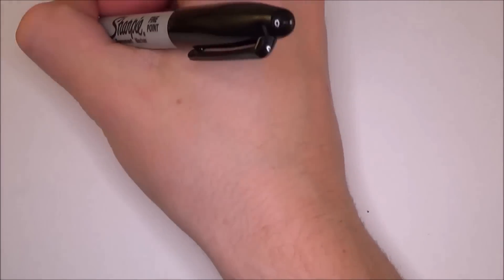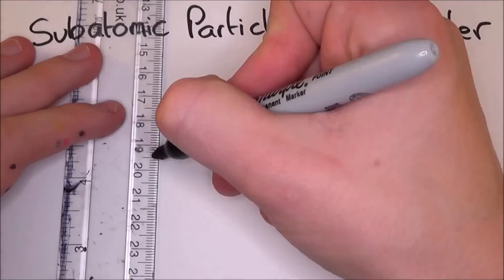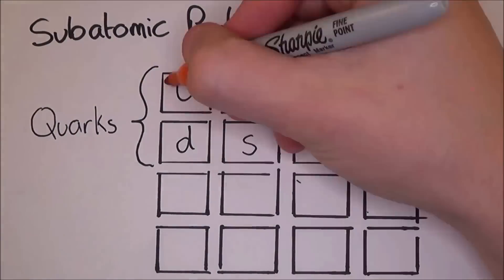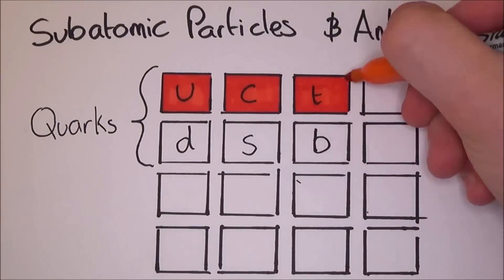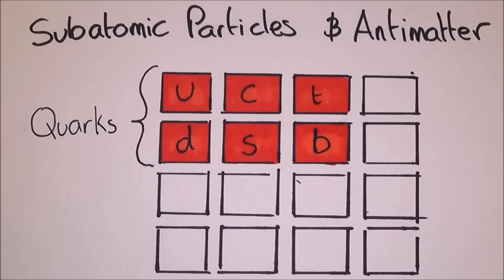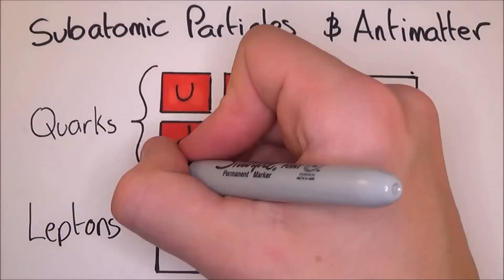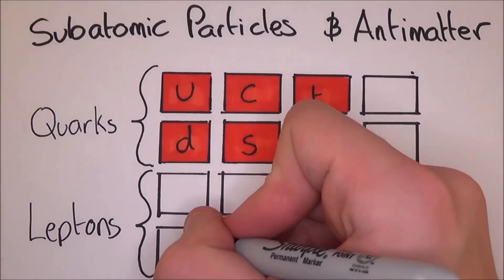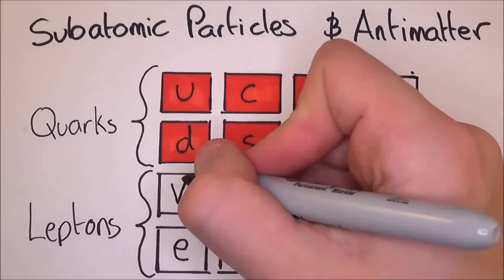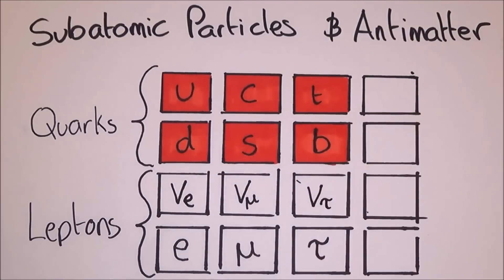Subatomic particles are split into three main sections: quarks, leptons — both of which are fermions — and bosons. With this topic, we are not really bothered about quarks, but leptons and bosons make up a big part of it. Leptons include electrons, muons, tau, electron neutrino, muon neutrino, and tau neutrino. Bosons include photons, gluons, the Z boson, and the plus and minus W bosons.